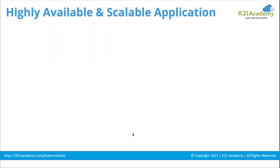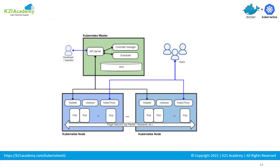That was our Kubernetes and Docker expert talking about the architecture of Kubernetes, its components — the master and worker nodes — and then pods, which are nothing but a collection of one or more containers that Kubernetes uses to deploy applications.